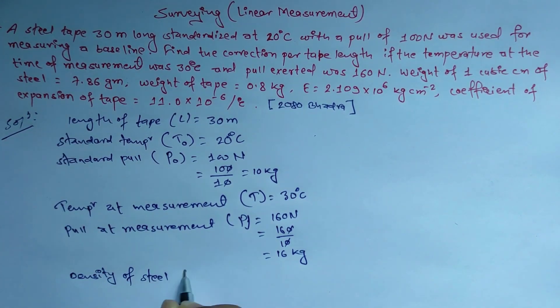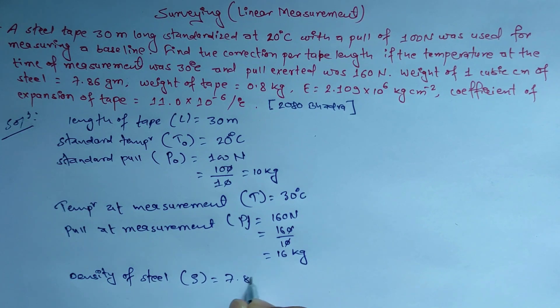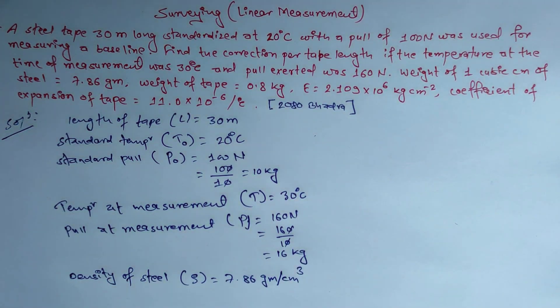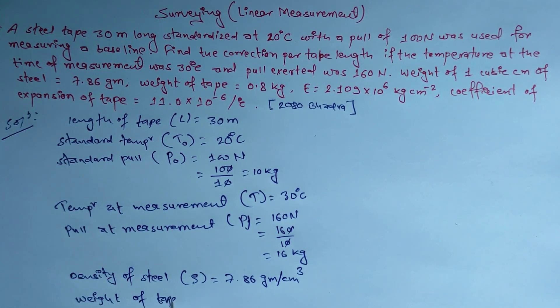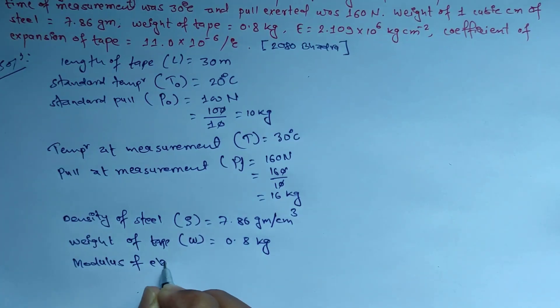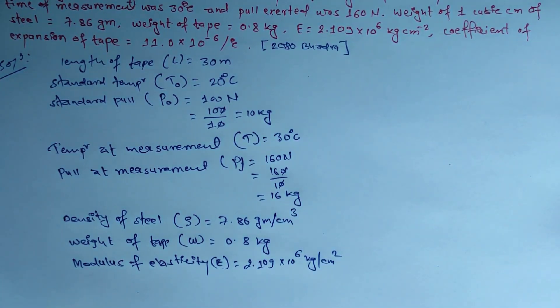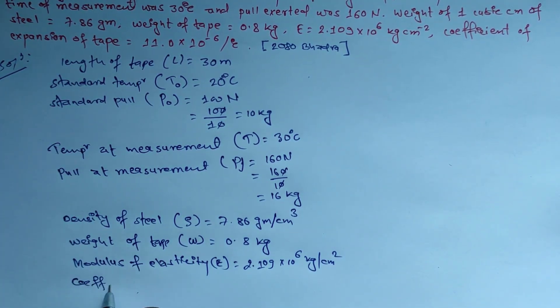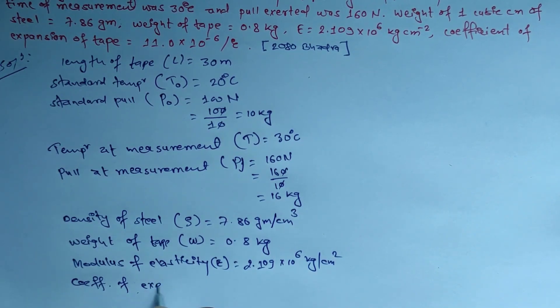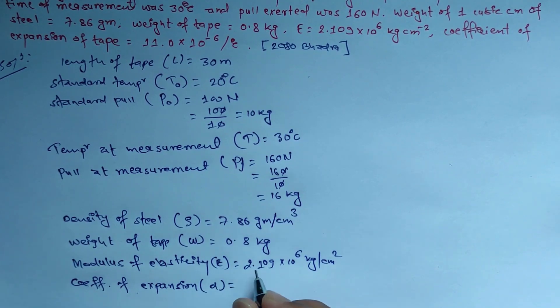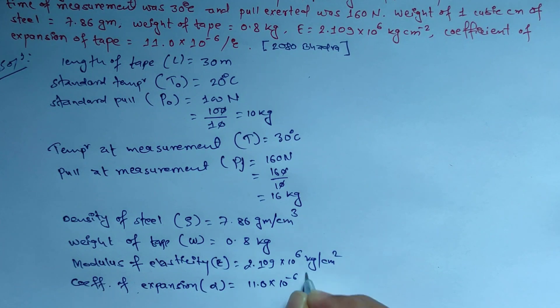Density of steel rho equals 7.86 gram per cubic cm. Weight of tape W equals 0.8 kg. Modulus of elasticity E equals 2.109 into 10 to the power 6 kg per cm square. Coefficient of expansion alpha equals 11.0 into 10 to the power minus 6 per degree Celsius.